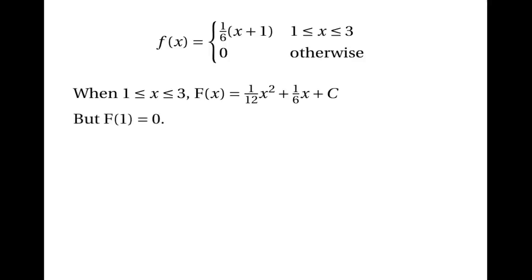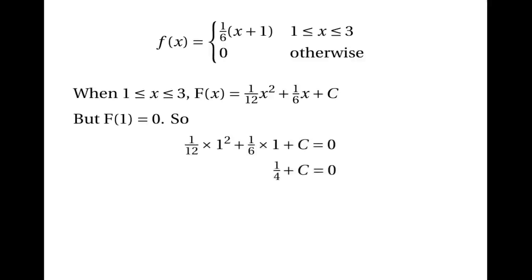We know that F(1) must be zero because the probability of getting up to and including one is nothing. So if we substitute one into the formula we should get zero. In other words, one twelfth times one squared plus one sixth times one plus c should equal zero. Solving that means one quarter plus c equals zero, and therefore c equals minus one quarter.